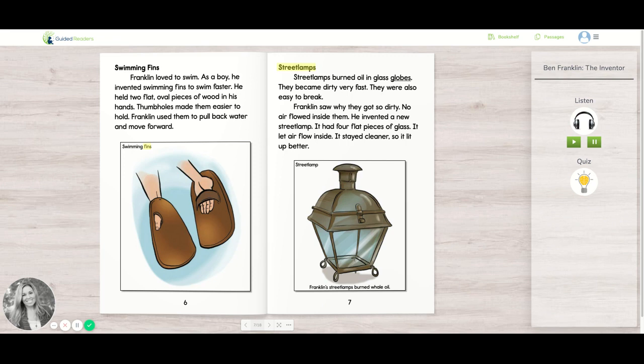Street Lamps burned oil and glass globes. They became dirty very fast. They were also easy to break. Franklin saw why they got so dirty. No air flowed inside them. He invented a new street lamp. It had four flat pieces of glass. It let air flow inside.